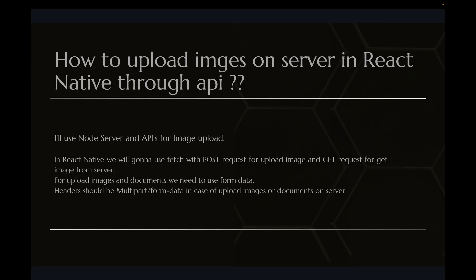I will use a Node server for this image upload. In React Native we will use fetch with a POST request to upload an image and a GET request to get the image from the server. For uploading images and documents we need to use FormData. The header should be multipart/form-data when uploading images or documents to the server. This is the brief overview of what we are going to do today.